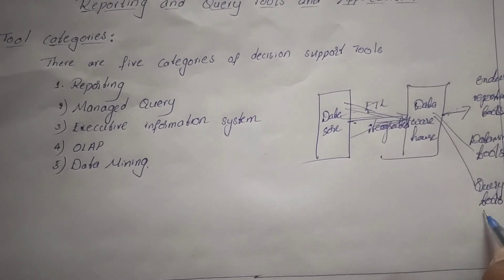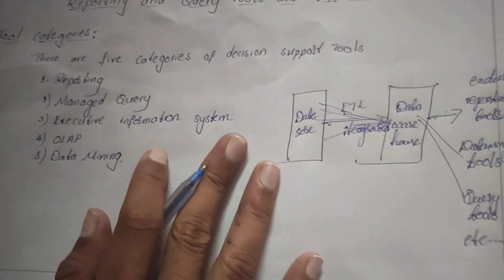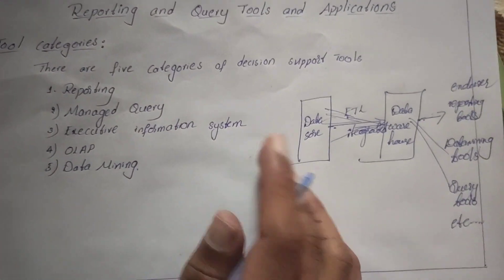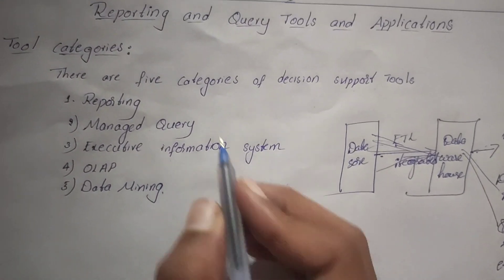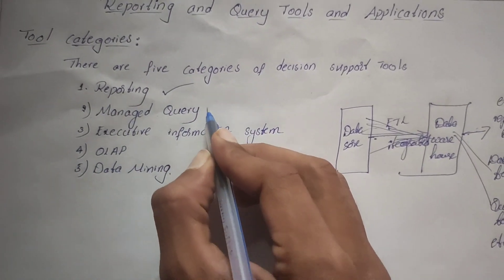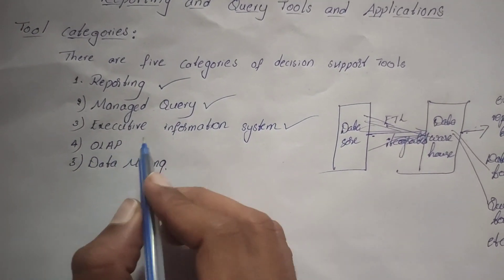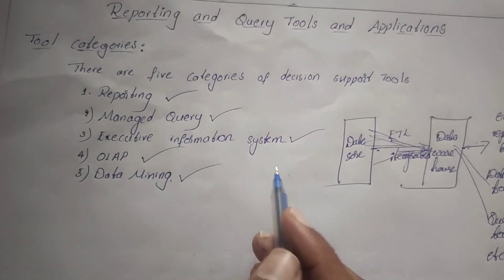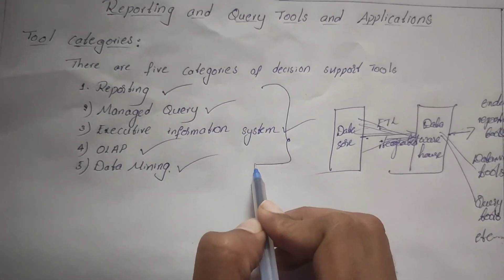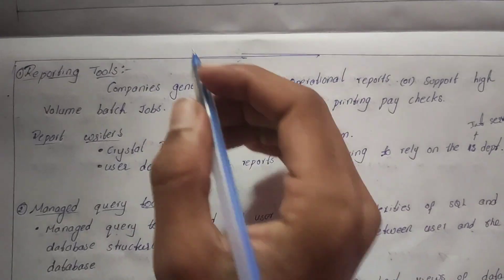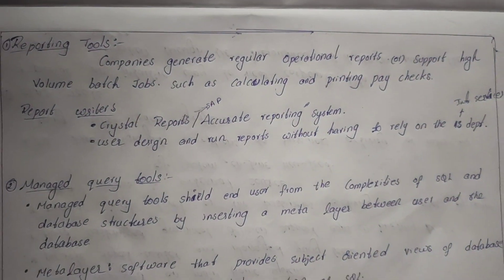These tools are divided into five categories of decision support tools: reporting tools, managed query tools, executive information system tools, OLAP tools, and data mining tools. We will discuss each of these five categories.